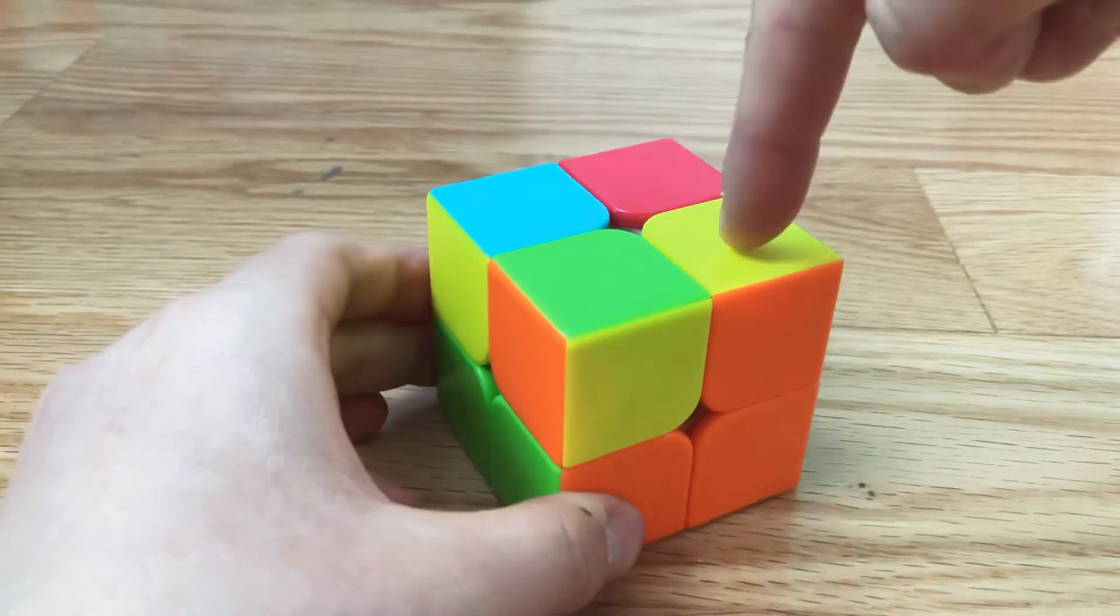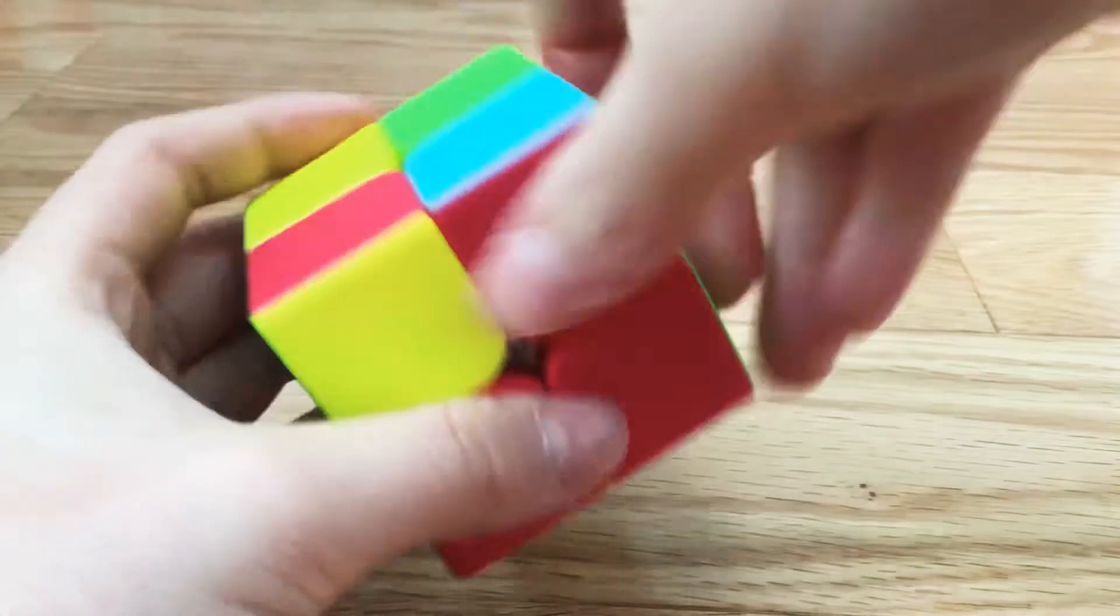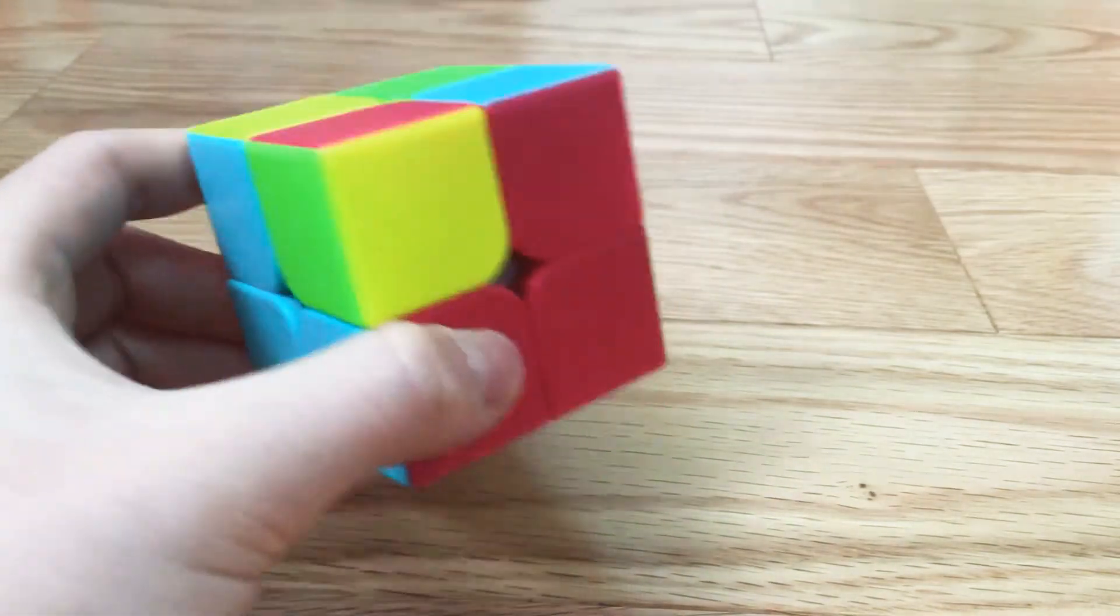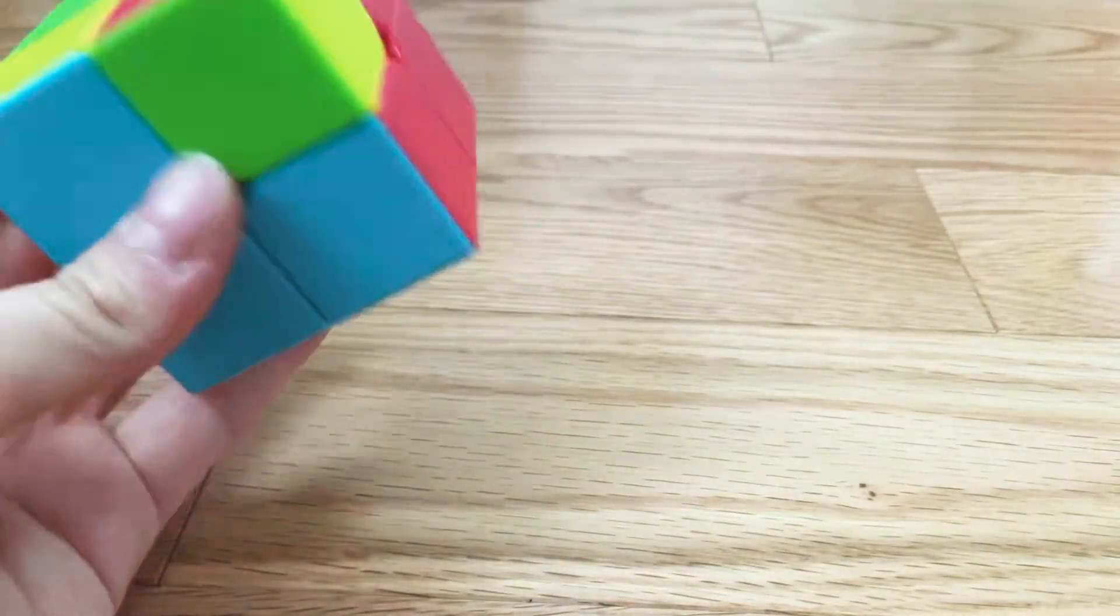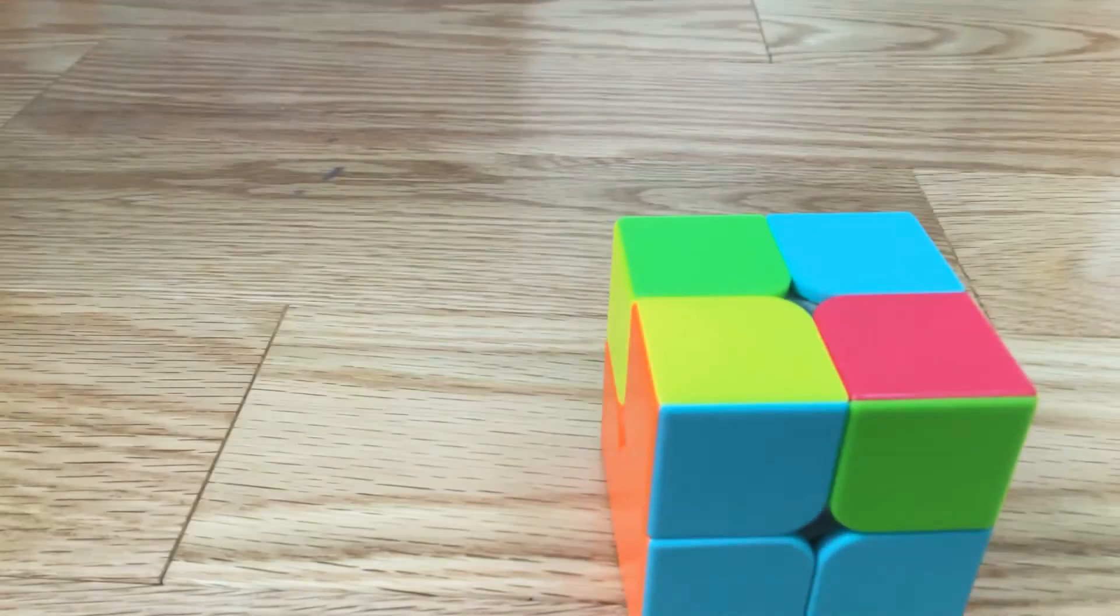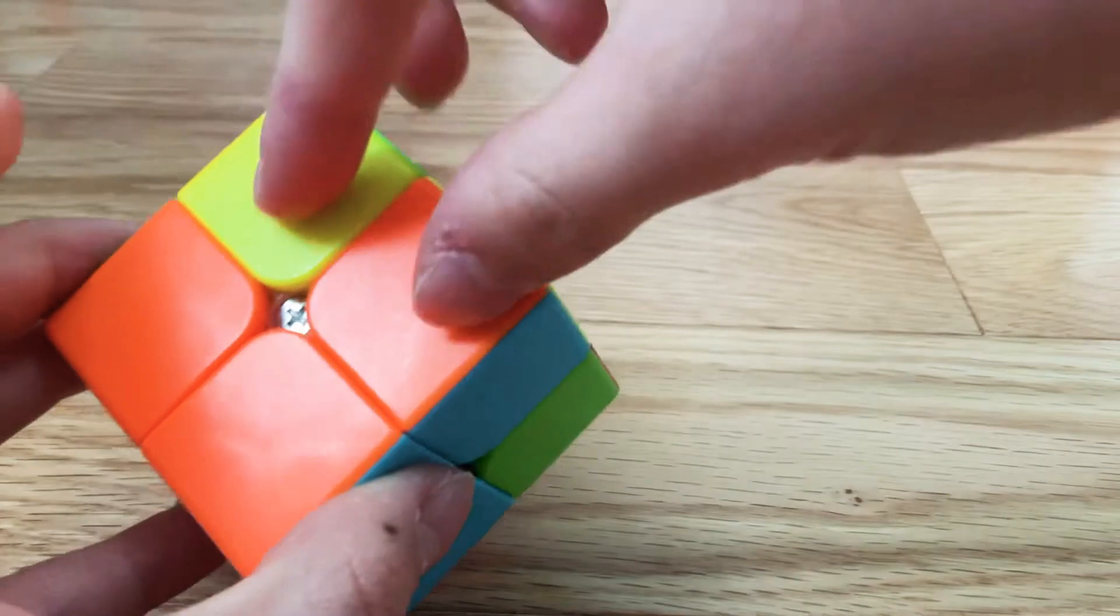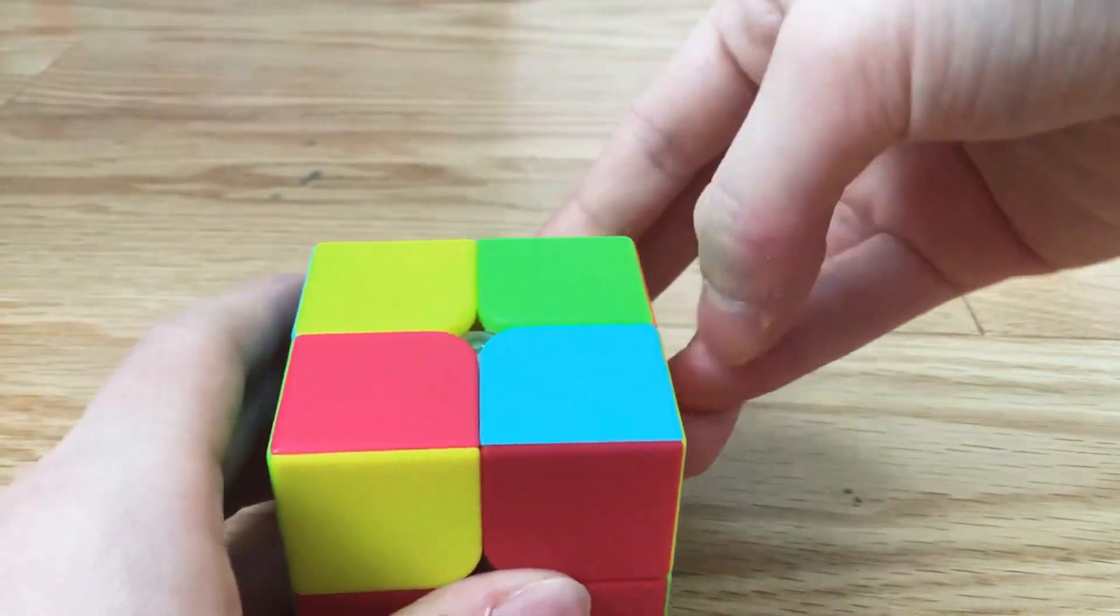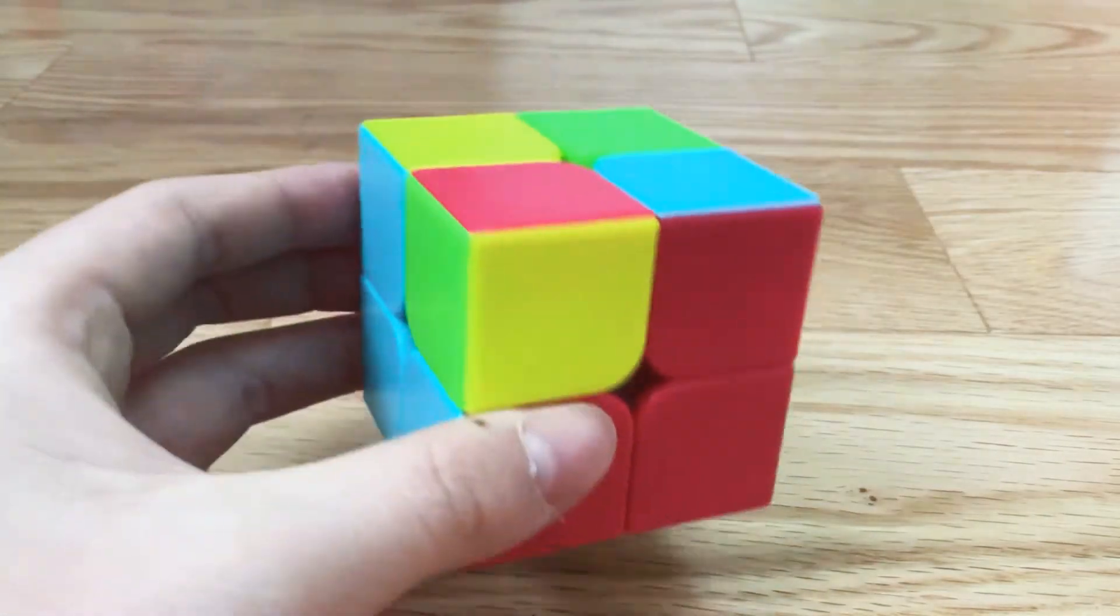So this one should be here, so this should be turned like that. So there's this algorithm to it. For my case, there are two correct, so you're going to put it on the back side and you're going to hold it like this. There's also another possibility that you're going to only get one that's correct. If there is only one that's correct, you're going to hold it here.